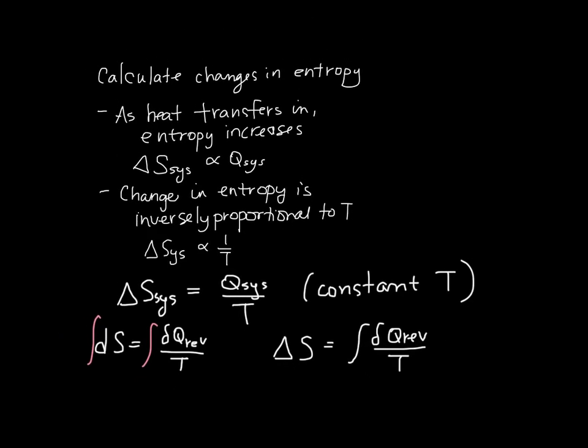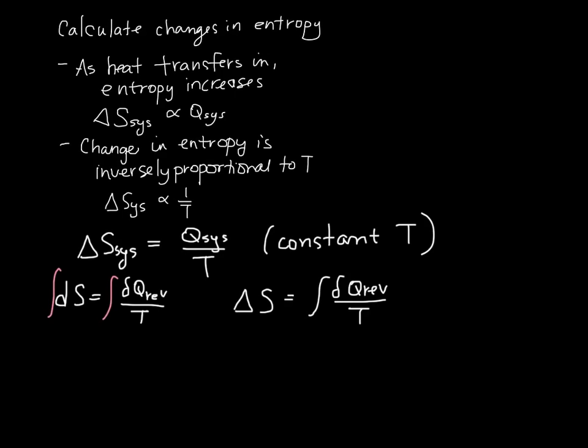We can rearrange this a little bit in one more way that makes this more useful. Just say that dQ reversible is equal to T dS. So this form here is one that we will use, and this form here is one that we will use.